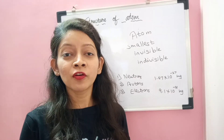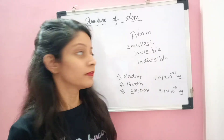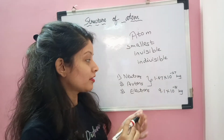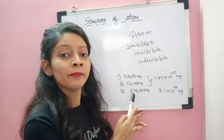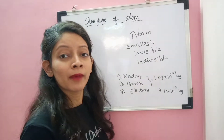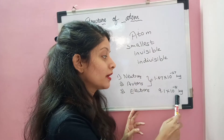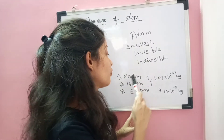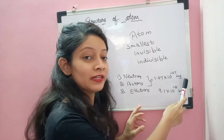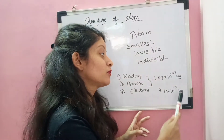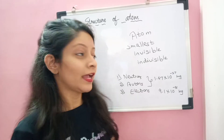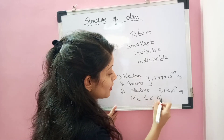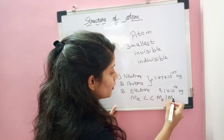Now we will learn about the mass of these subatomic particles. For neutrons and protons, the mass is the same: 1.67 × 10⁻²⁷ kg. For electrons, the mass is 9.1 × 10⁻³¹ kg. There is a huge difference — neutrons and protons are 10⁻²⁷ kg while electrons are 10⁻³¹ kg, so the mass of electrons is very very less as compared to the mass of protons or neutrons.